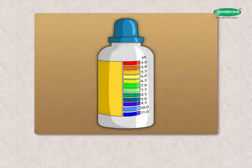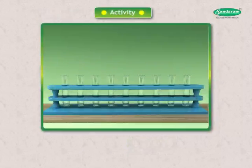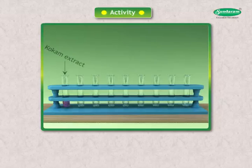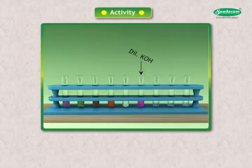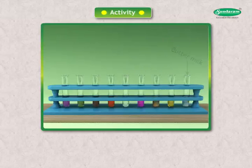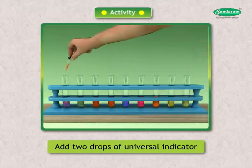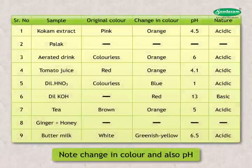A mixture of several indicators is known as a universal indicator. Let us perform this activity: Collect samples of kokum extract, palak extract, any aerated drink, tomato juice, dilute HNO3, dilute KOH, prepared tea, ginger with honey, and buttermilk in test tubes. Add two drops of universal indicator to each. Note the change in colour and also pH.